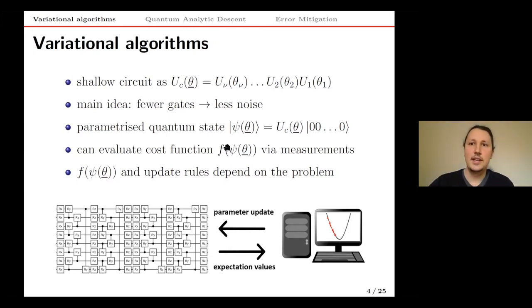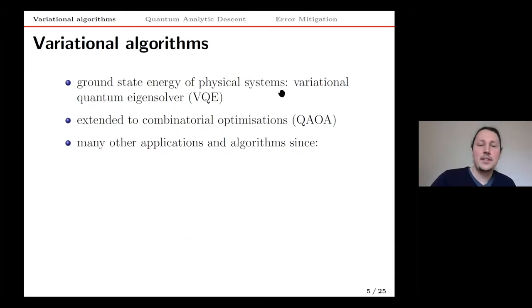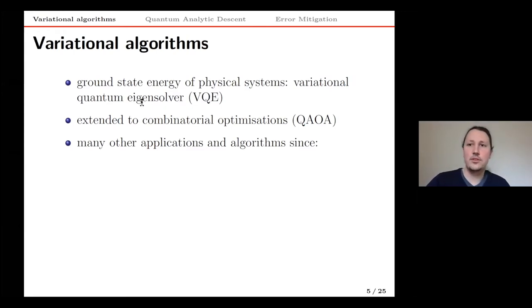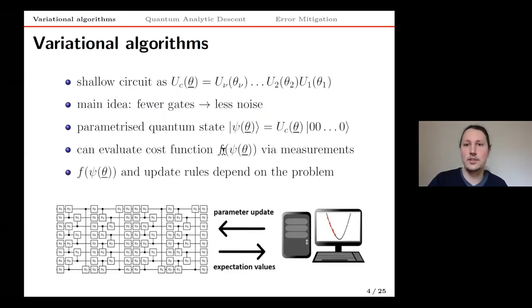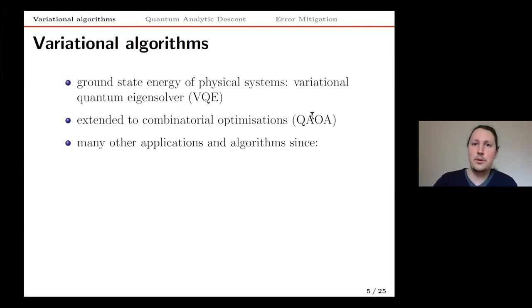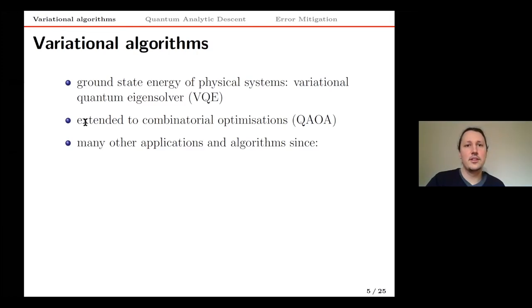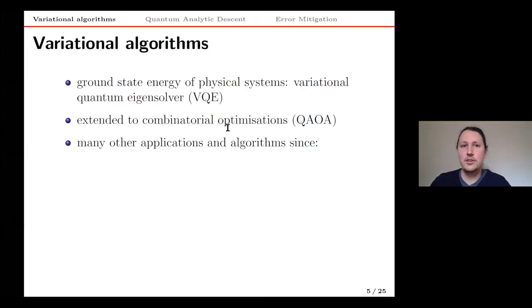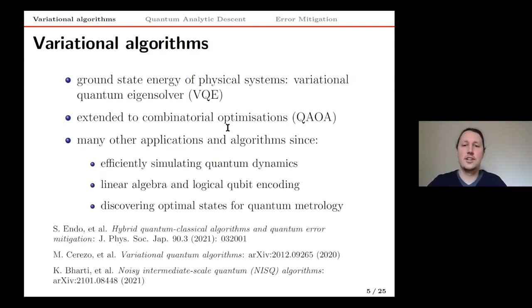Typically this cost function is an energy of some Hamiltonian, for which we can measure term by term these Pauli expectation values. The most obvious application is the variational quantum eigensolver (VQE), in which we find the ground state of some Hamiltonian by preparing a parametrized quantum state, measuring its corresponding energy, and minimizing this energy as a function of the parameters. This is very useful for chemistry and material science, and has extended to combinatorial optimization and graph algorithms.